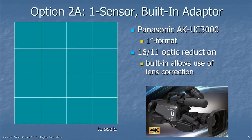Here's a variation on that. Panasonic introduced this — they're using a one-inch format chip instead of a Super 35mm chip. Because it's closer to the two-thirds-inch size — about halfway in between — the reduction is just a 16-to-11 optical reduction, so they lose much less light. And by having the adapter built into the camera, that allows the use of lens corrections to improve the pictures.